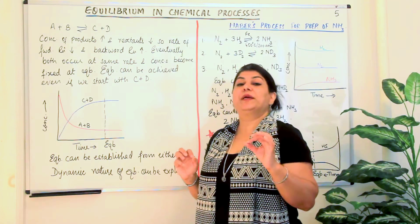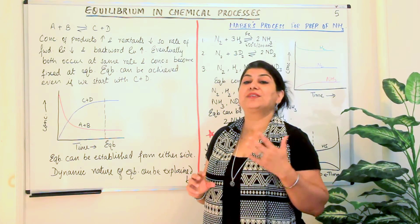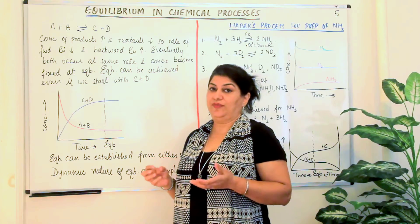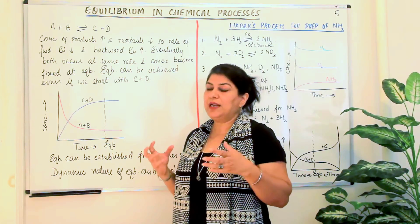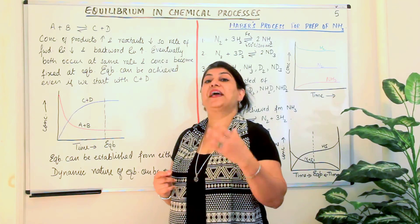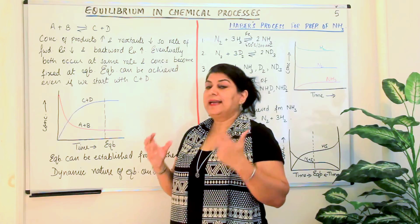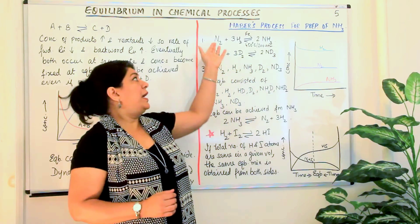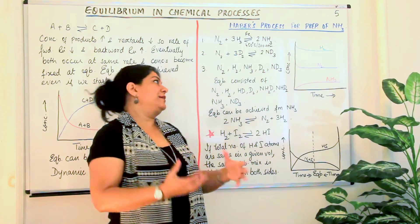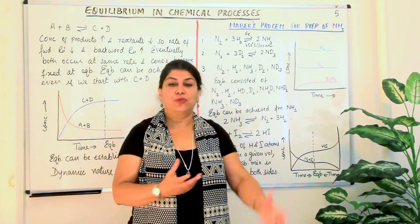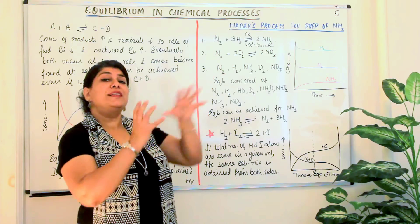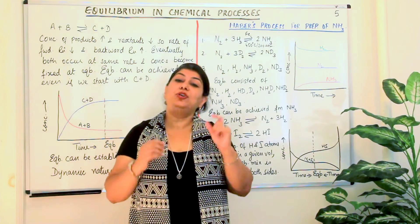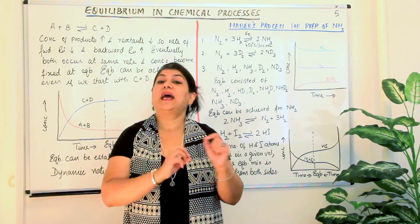We know that the state of equilibrium is dynamic in nature, meaning there is a lot of activity going on. In physical processes, we observed this dynamic nature. In chemical processes, it is possible to give actual evidence of the dynamic nature of equilibrium, and this is done using Haber's process — a process of making ammonia using nitrogen from the atmosphere and hydrogen from petroleum products.